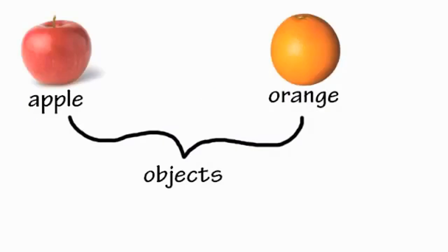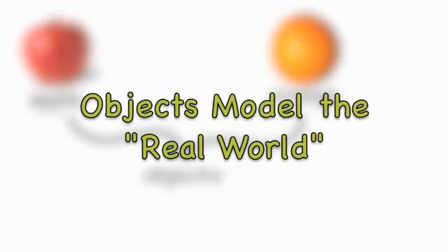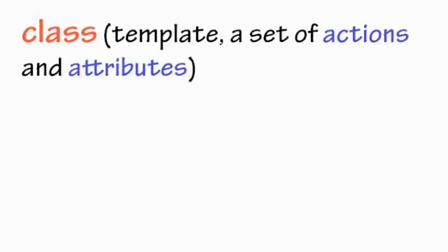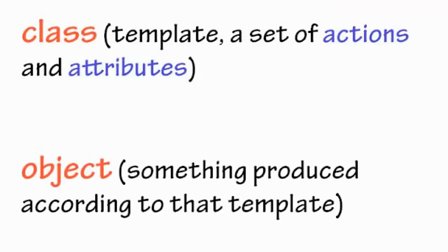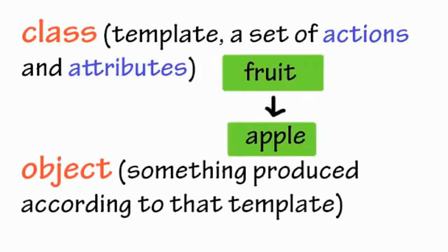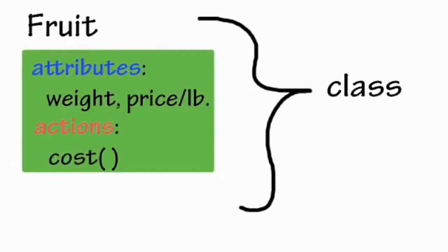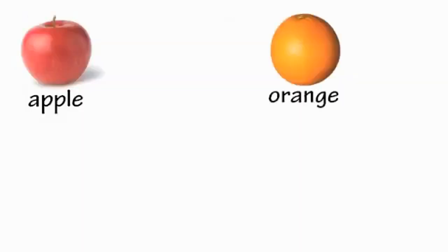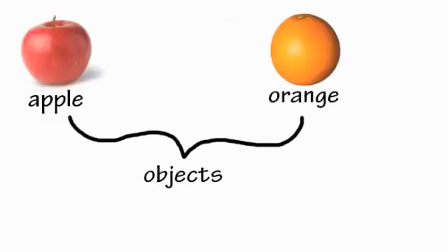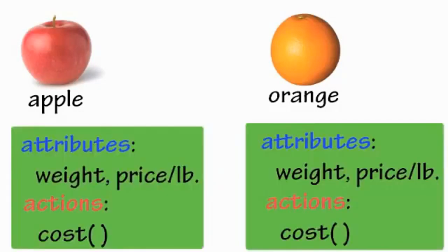A class is a template or a set of actions and attributes, and an object is an instantiation of this template. We can imagine that a class can be like fruit, and an object can be a specific fruit. For example, apples and oranges are fruits — both are objects of the class fruit, and they have similar attributes because they are both from the same class. They also have the same action, which is to cost something.